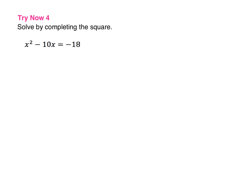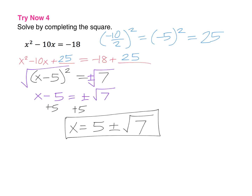Here's one last try now problem for you to try on your own. Go ahead and pause the video and give this problem a try. Here is your final solution: you should have x equals 5 plus or minus the square root of 7. You can see all the work steps here. This concludes lesson 9.5, day 2 on completing the square. Thanks for watching and good luck as you practice some problems on your own.